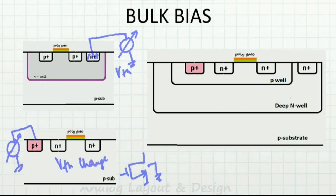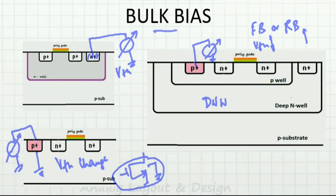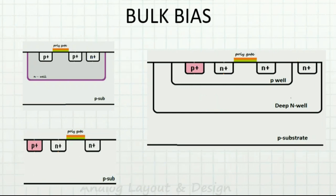The NMOS substrate is always connected to ground, so if I want to change the bulk voltage of an NMOS I cannot do it directly. I have to use what is known as the deep N-well — this is discussed in another video. Using the deep N-well, I can now vary this bulk voltage. When I vary it, depending on forward or reverse bias, VTH will either decrease or increase. This bulk bias concept is extensively used in FDSOI.